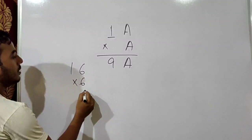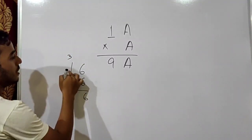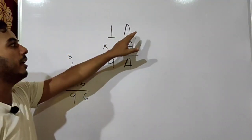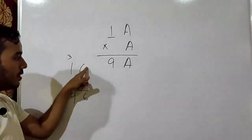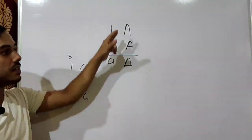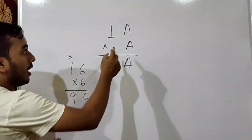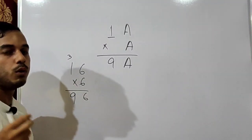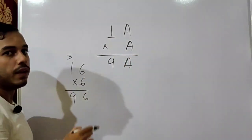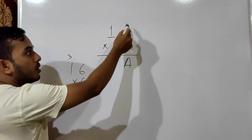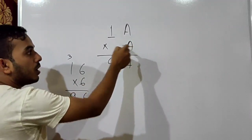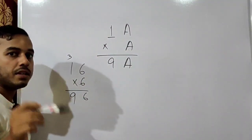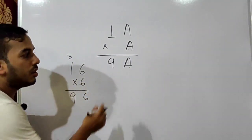Then A is 6: 16 into 6. Let us calculate: 6 into 6 is 36, write 6 carry 3. Then 6 into 1 is 6, plus 3 is 9. So 16 into 6 is 96. If we put A as 6, then 1A becomes 16, and the result 9A becomes 96. This matches perfectly.